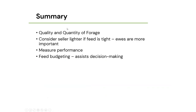To summarise: quantity and quality of forage is the first priority to achieving good lamb growth rates. Consider selling light store lambs if feed is tight — the ewes are more important. Measuring performance helps gauge how well you're doing and where tweaks are needed. Feed budgeting helps assist that decision making to make more from grass.